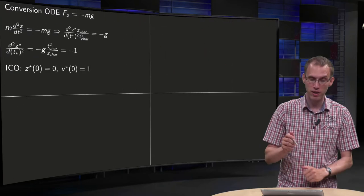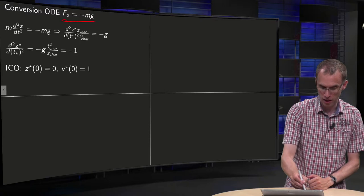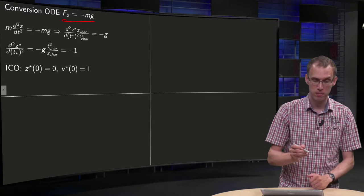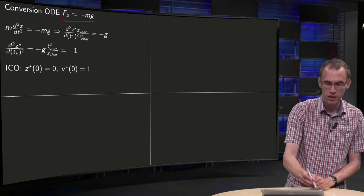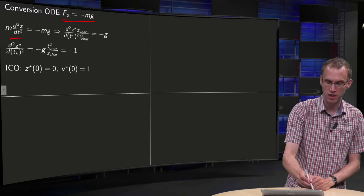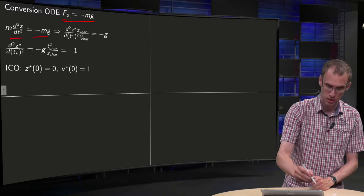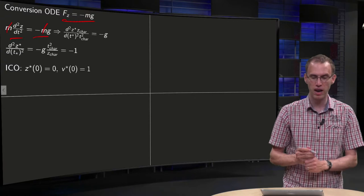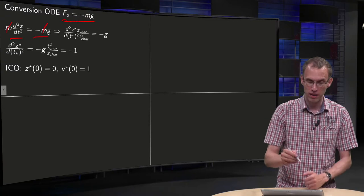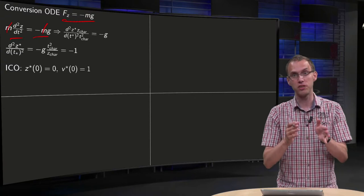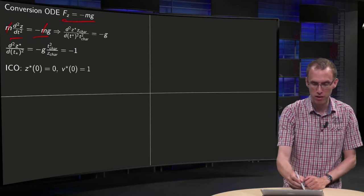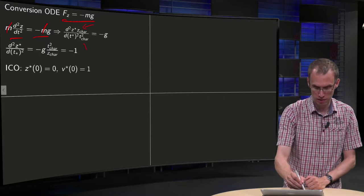Now what about our equation? So we have to convert the ODE, F_z equals minus mg. So we get m times acceleration equals minus mg. You see the factor m drops out. And in the same way we substitute z* times z_char.